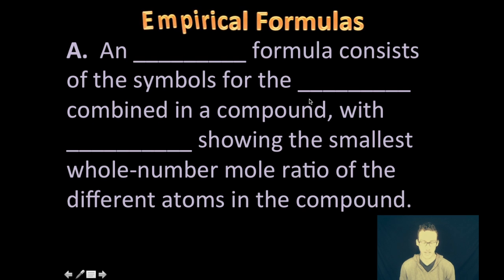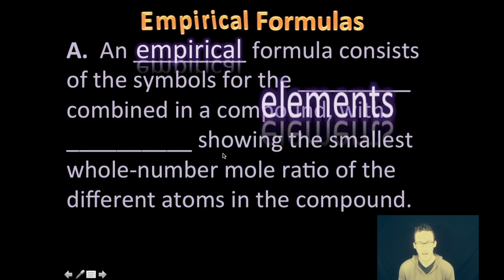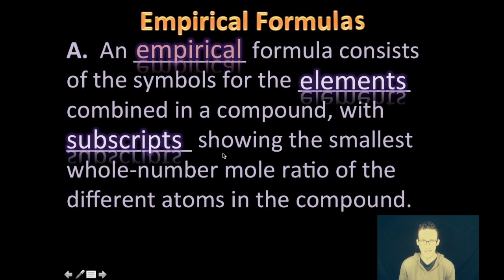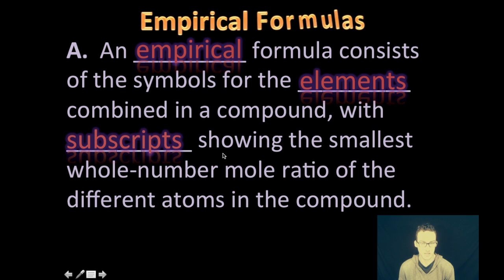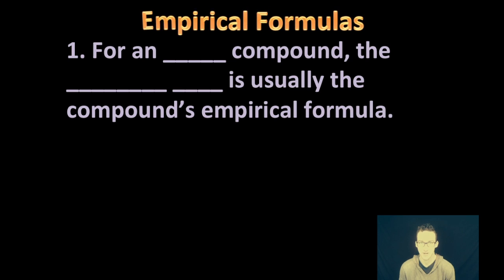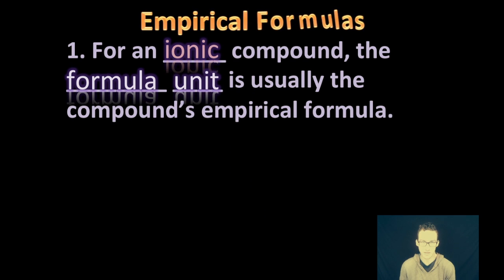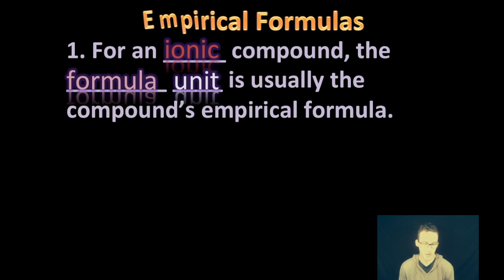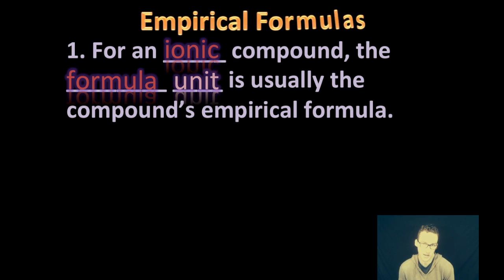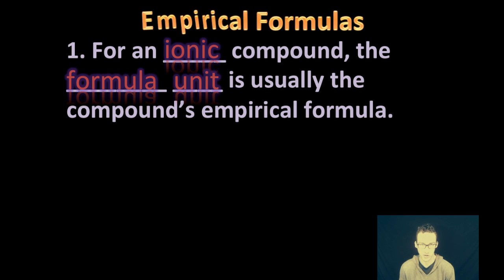So let's get started. First things first, what is an empirical formula? An empirical formula simply consists of the symbols for the elements combined in a compound with the subscript showing the smallest whole number mole ratio of the different elements in that compound. Now, when we're talking about ionic compounds, typically the formula unit is the empirical formula. Just based on how we write ionic compounds, it will already be the smallest ratio.